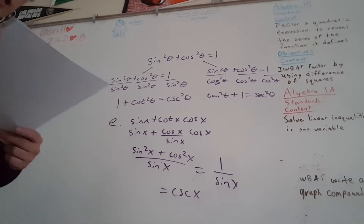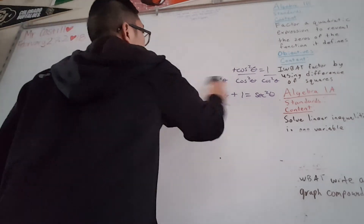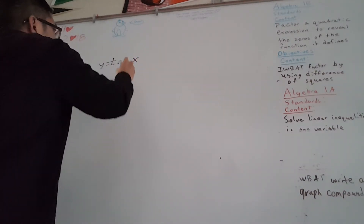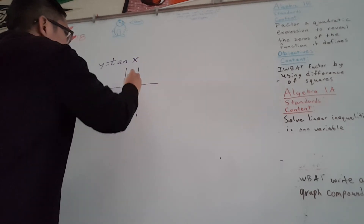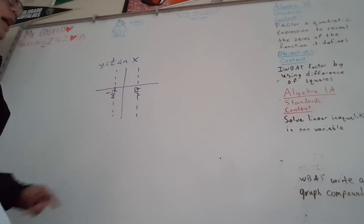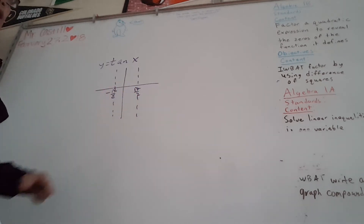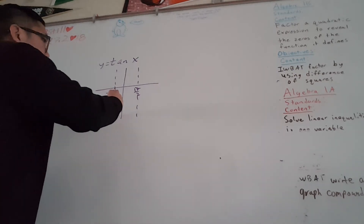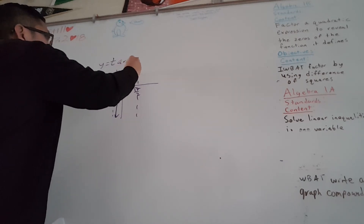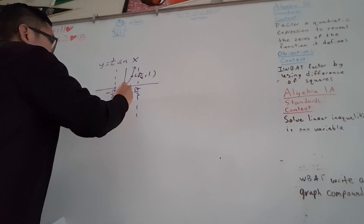Number 11 is the graphing. You have to remember how the parent graphs look. The tangent graph has asymptotes at pi over 2 because cosine is undefined at pi over 2 and negative pi over 2 where x is 0. The three key points are: pi over 4, 1; then 0, 0; and negative pi over 4, negative 1. It continues periodically.